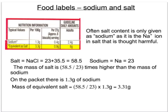If you're given the mass of sodium and need to work out the equivalent mass of salt, you have to scale up by the factor 58.5 over 23. As it says on the packet, the mass of sodium is 1.3 grams. To find the equivalent in salt: 58.5 divided by 23, multiplied by 1.3 grams of sodium, comes to 3.31 grams of salt. As you can see, the label gives the equivalent amount of salt and they've done it correctly.